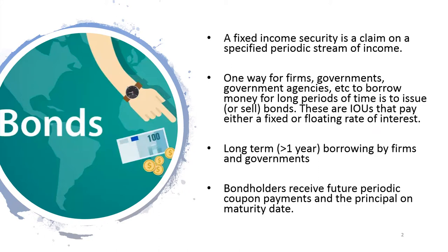A bond is also known as a fixed income security as it has a claim on a specified periodic stream of income. Bond is a long-term debt instrument issued by a corporation or government to borrow money for long periods. It is a long-term contract under which a borrower agrees to make payments of interest and principal on specific dates to the holders of the bond. Long-term means more than a year. The bondholders, who are the lenders, receive future periodic coupon payments and the principal on the maturity date. The coupon interest rate can be either at a fixed or floating rate of interest.